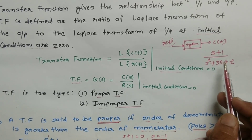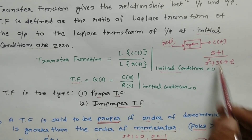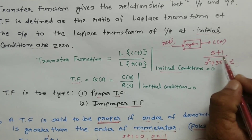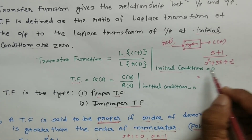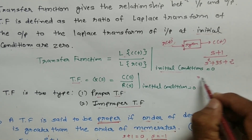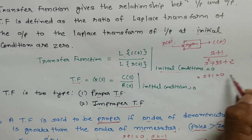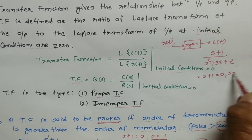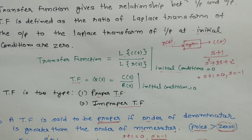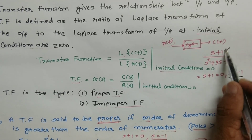To find the zeros, we look at the numerator: s + 1. Setting s + 1 equal to zero gives s = −1. That is the zero of the transfer function.